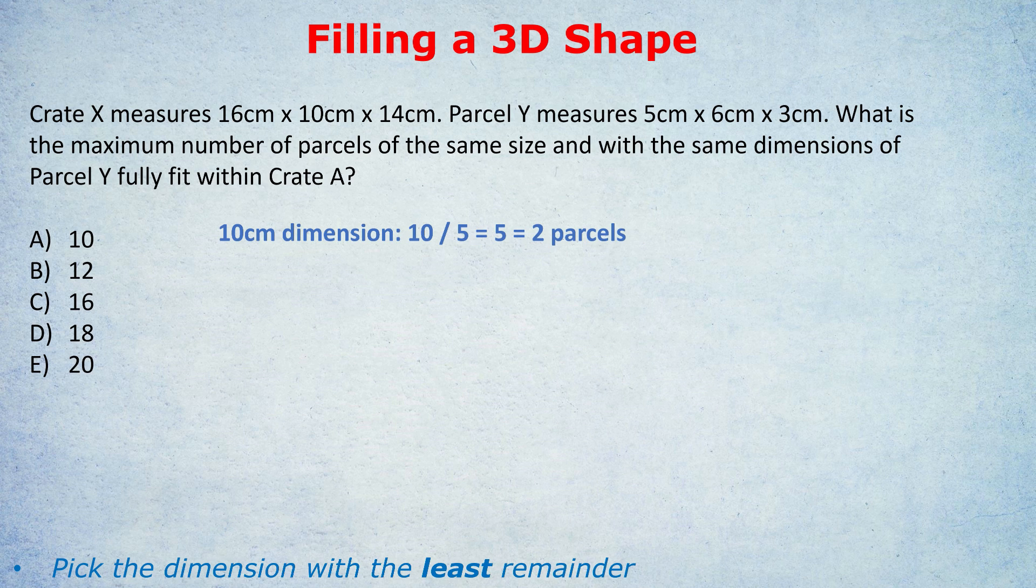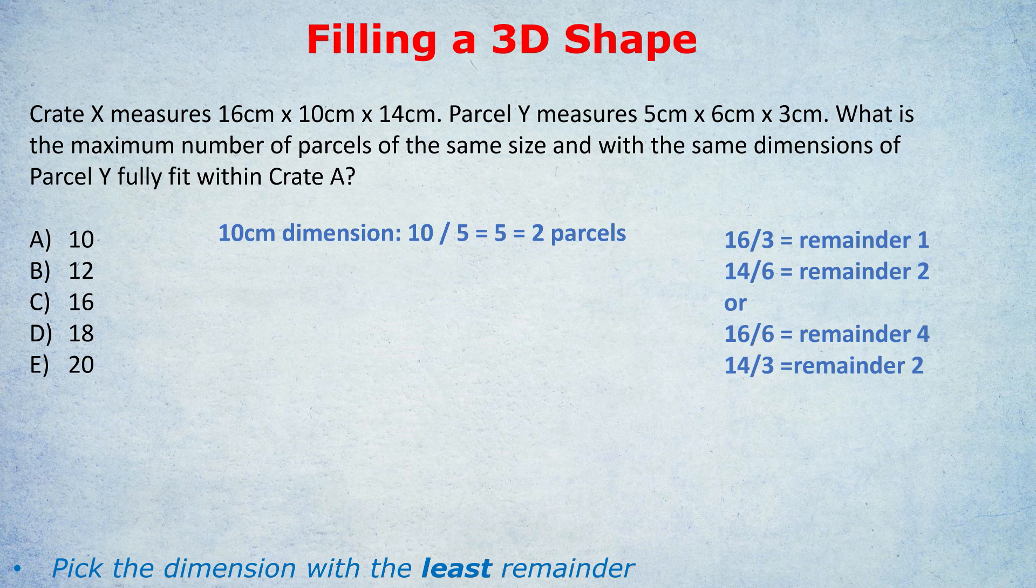Well, think about the remainders you would get in each scenario. If we did the 16 divided by 3, we get a remainder of 1. 16 divided by 3 is 5 remainder 1. If we did the 14 by the 6, we get a remainder of 2. 14 divided by 6, you get 12 remainder 2. So those are the two remainders, 1 and 2. But if we did it the other way round, where the 16 is divided by the 6 and the 14 is divided by the 3, we get remainders of 4 and 2 respectively. Much bigger remainders. And as I've written down below, we're always picking the dimension with the least remainder. So we do it the first way round. The 16 divided by the 3 and the 14 divided by the 6.